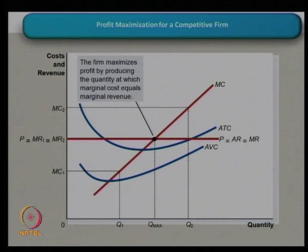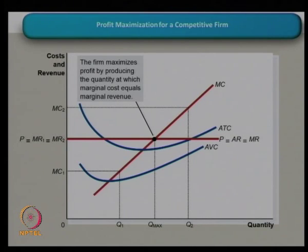Graphically, P = AR = MR is the demand curve; ATC is the average total cost and AVC is the average variable cost; the marginal cost curve intersects ATC and AVC at their minimum points. The firm maximizes profit by producing where MC = MR. To illustrate with a numerical example: TR = 48Q − Q², TC = 12 + 16Q + 3Q². We need to calculate the output that maximizes profit. MR = dTR/dQ = 48 − 2Q, MC = dTC/dQ = 16 + 6Q.